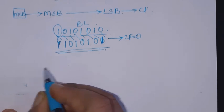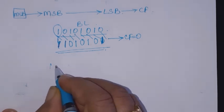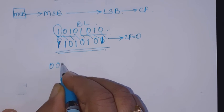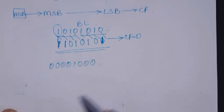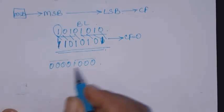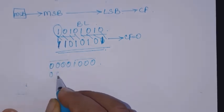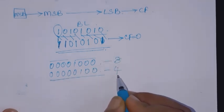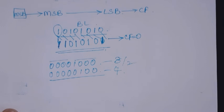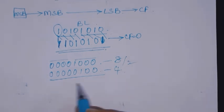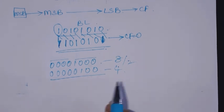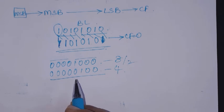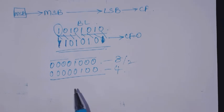Shift right causes division by 2. For example, if a register holds 8 and you shift right by 1 bit, the value becomes 4 — that is 8 divided by 2. So shifting right divides the number by 2. This concludes the shift instructions. There is one more set — rotate instructions — which are also bit manipulation instructions, and we will see those in the next video.